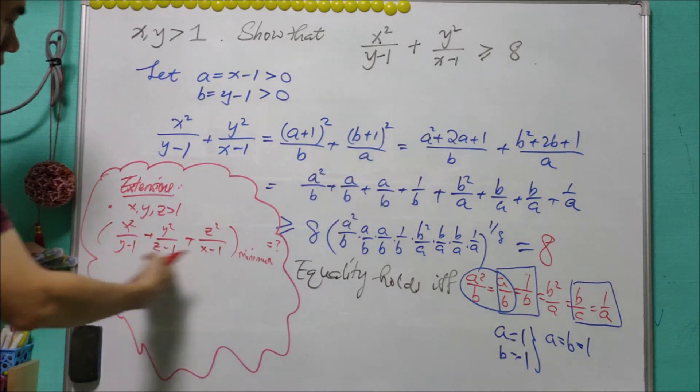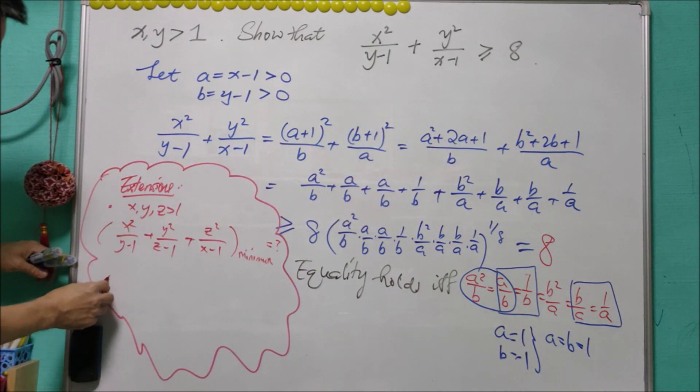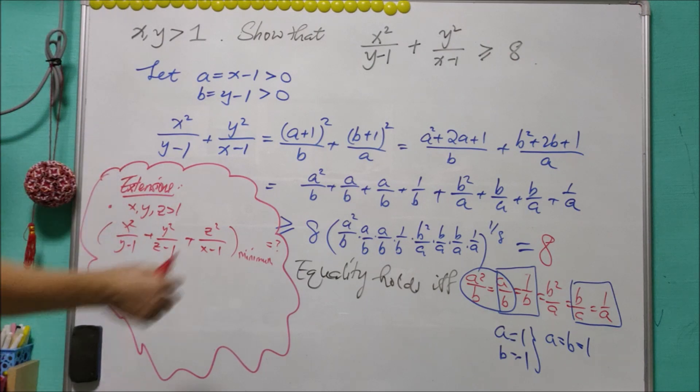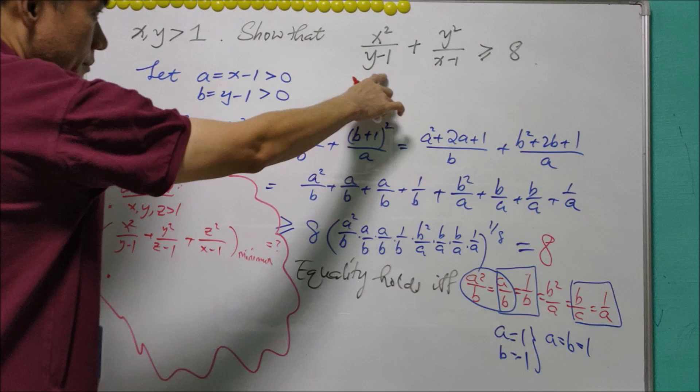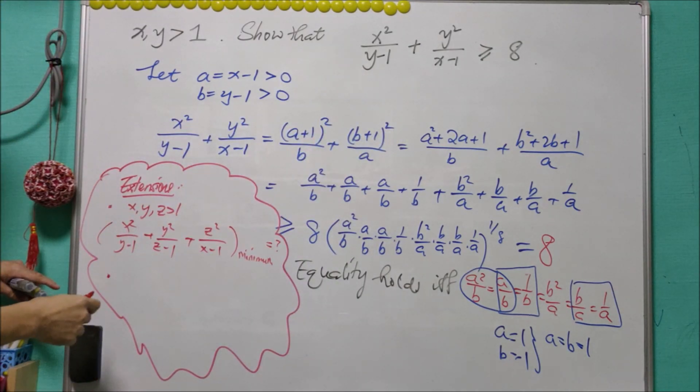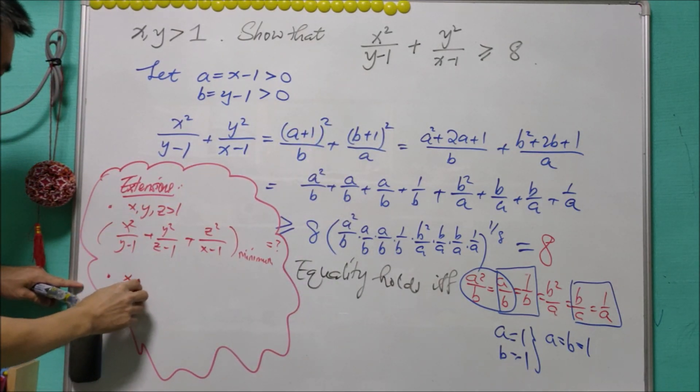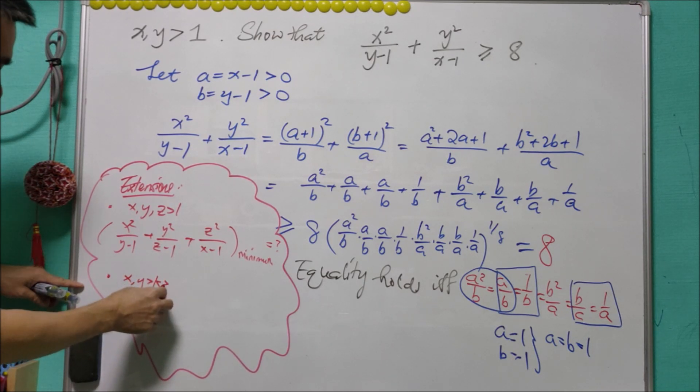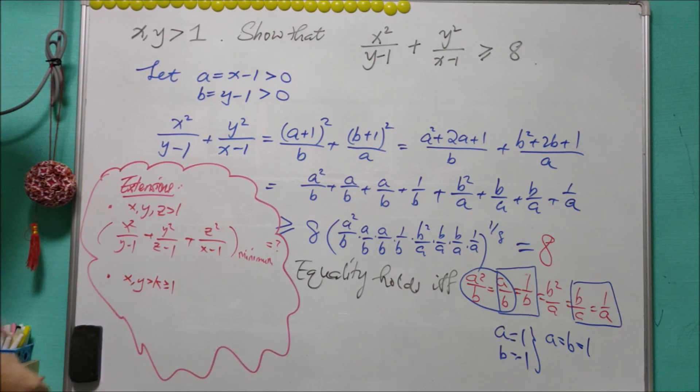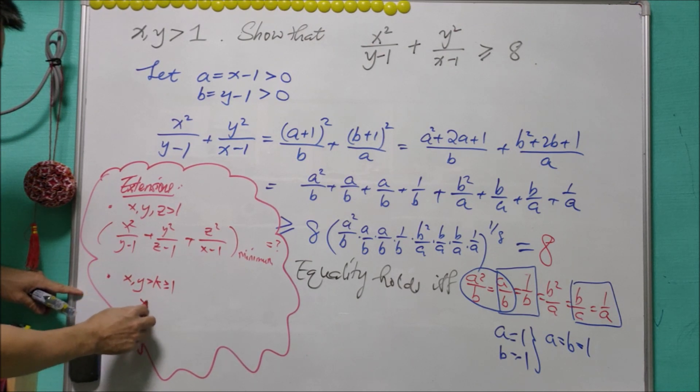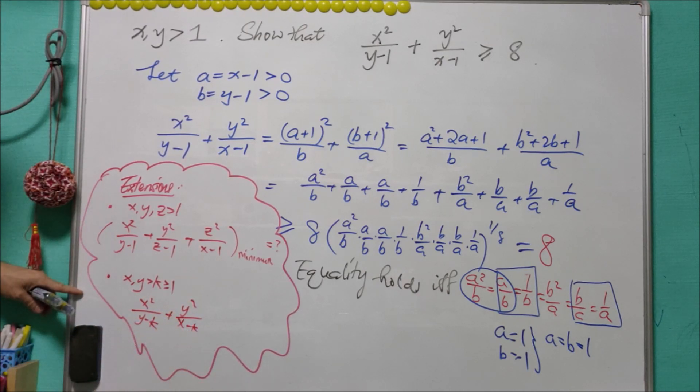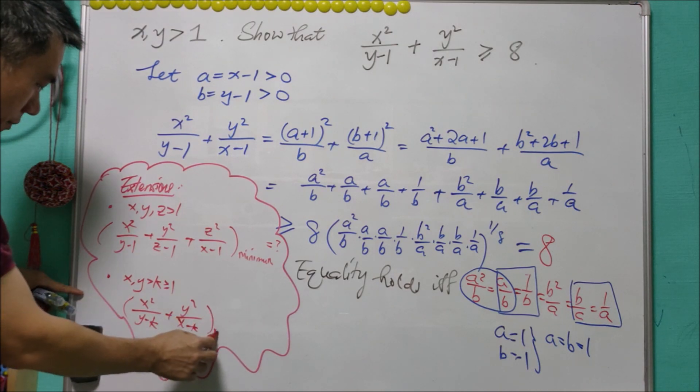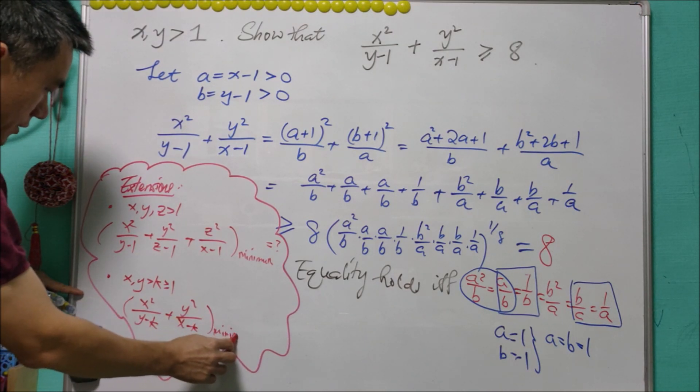The second extension will be: we still stick to X and Y alone, but instead of Y-1, it can be Y-k. So in this case, X, Y is greater than k, where k at least equals one. So this will be X²/(Y-k) and Y²/(X-k). If so, what is the minimum value for this expression?